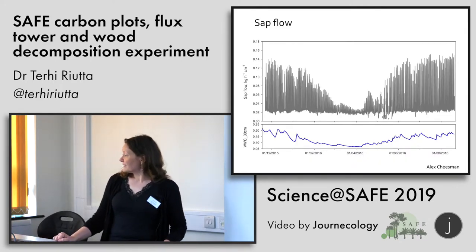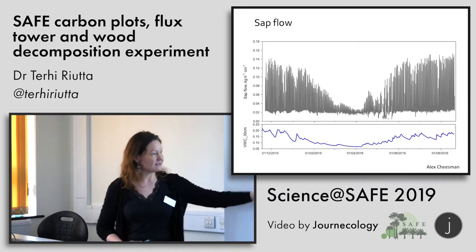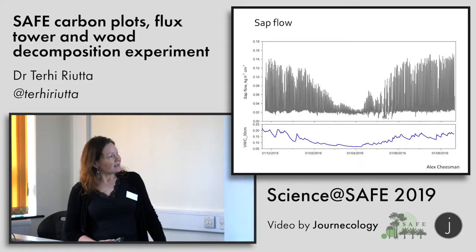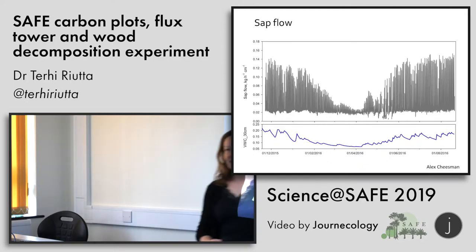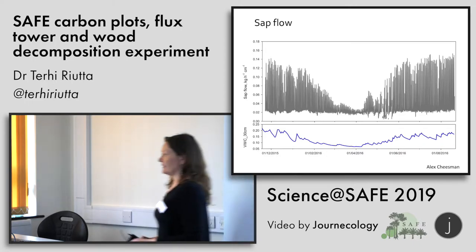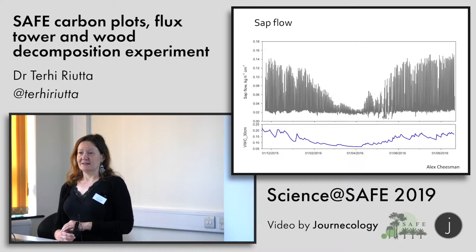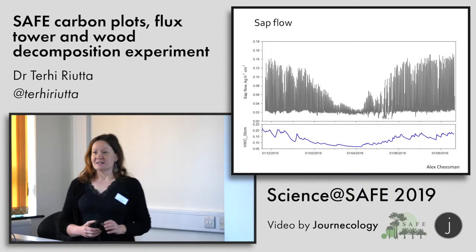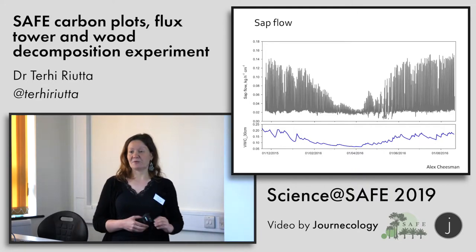The process that showed the clearest response was sap flow. Here is an example from one stem — a Parashorea, a Dipterocarp species — and you can see that the tree basically stopped functioning during the peak drought. But it didn't take a very large rainfall event for it to start functioning again, and it bounced back fairly quickly. This also agrees with the FieldMap data showing that Dipterocarps do seem to be able to recover from these drought events.